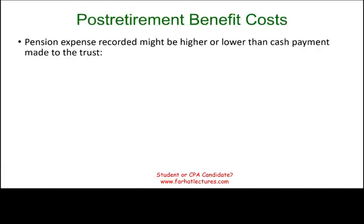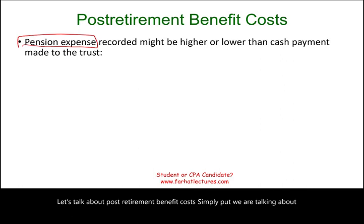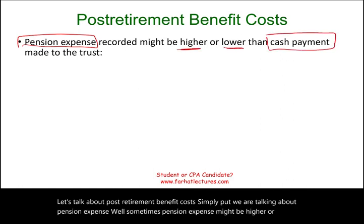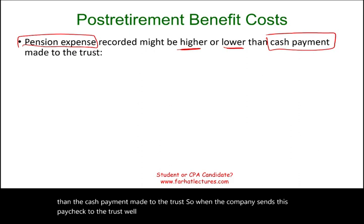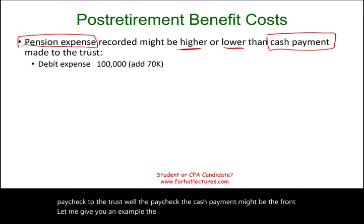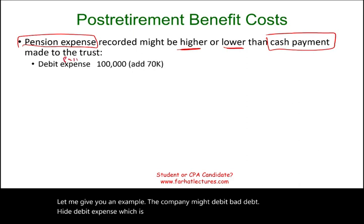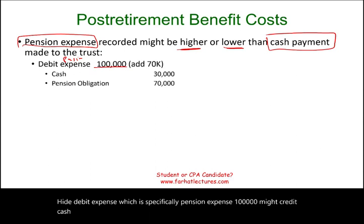Let's talk about post-retirement benefit cost — simply put, pension expense. Sometimes pension expense might be higher or lower than the cash payment made to the trust. For example, the company might debit pension expense $100,000, credit cash $70,000, and credit pension obligation $30,000.